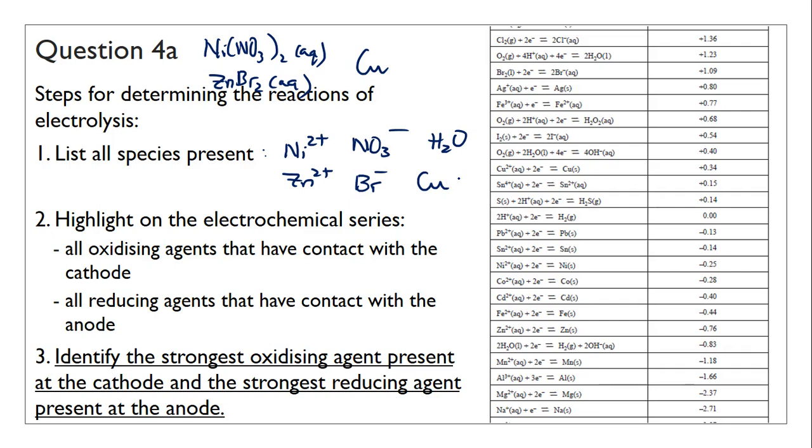Next is to look at the oxidizing and reducing agents that have contact with the anode and cathode. Anything that is in the electrolyte is going to have access to both the cathode and the anode because they are submerged in this solution. Because copper acts as both the cathode and anode, copper will also have access to cathode and anode. So every species here you need to highlight in your electrochemical series. We have nickel ions, zinc ions, and water, so there are three oxidizing agents present that have access to the cathode. There's water, bromide ion, and copper, so you have three reducing agents as well.